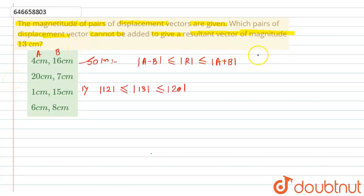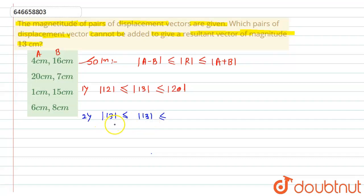For the second option, 20 − 7 = 13, so the minimum value equals 13, which is acceptable. The maximum is 20 + 7 = 27, so 13 lies within the range. This option also satisfies the condition and is not our answer.